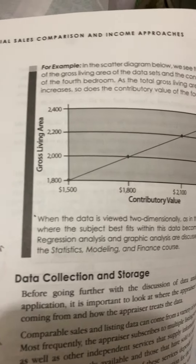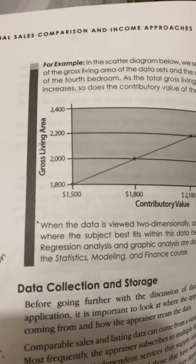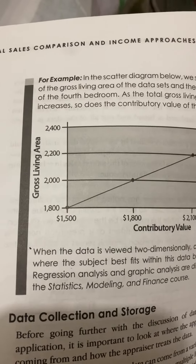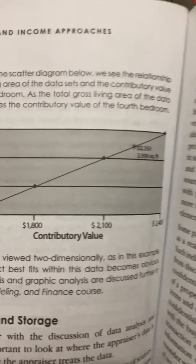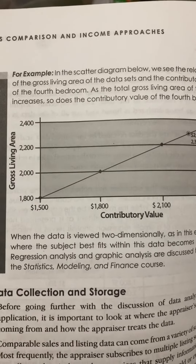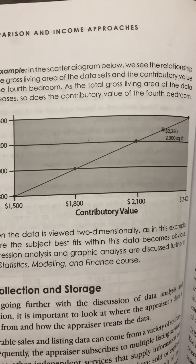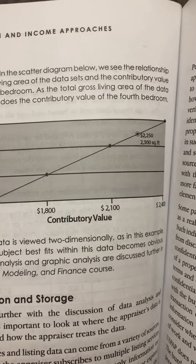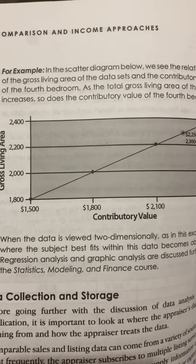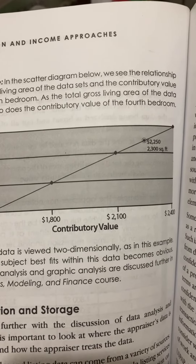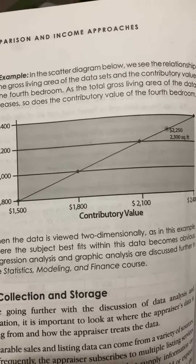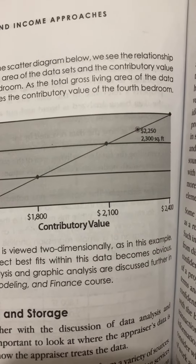Residential Sales Comparison and Income Approaches, page 74. For example, in the scatter diagram below, we see the relationship of the gross living area of the data sets and the contributory value of the fourth bedroom. As the total gross living area of the data increases, so does the contributory value of the fourth bedroom.